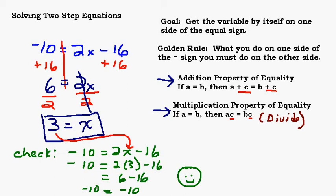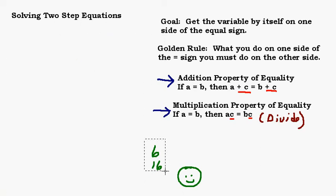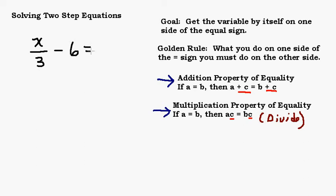Should we try one more? Practice makes perfect. There's one kind of problem we haven't done yet that we should do. How about X over 3 minus 6 equals 1? If you want to take a shot at that, pause the video, give it a try, and start it up when you're ready. This one looks a little different because I have X over 3, but if we just follow these rules we should be able to make it work.